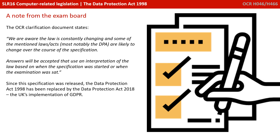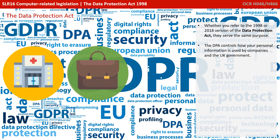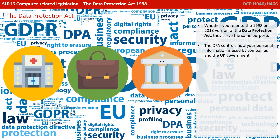Since this specification was released, the DPA has been updated and it's now the Data Protection Act 2018, which includes the UK's implementation of GDPR. Whether you refer to the 1998 or the 2018 version of the DPA, they serve the same purpose: they control how your personal information is used by companies and the UK government.